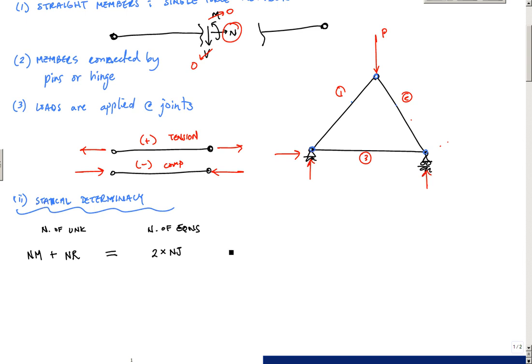If this is equal, if the number of unknowns equals the number of equations, then this is statically determinate. If the number of unknowns is greater than the number of equations, then this is statically indeterminate. And if my number of unknowns is less than my number of equations, then I have an unstable system.